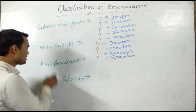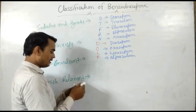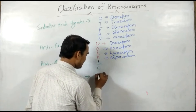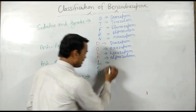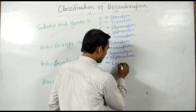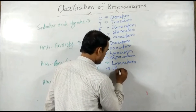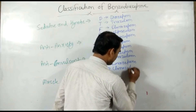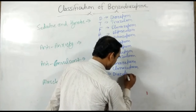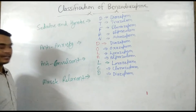The next subclass is anticonvulsant — which benzodiazepines have anti-convulsant action? Remember the mnemonic L-C-T. L for Lorazepam, C for Clonazepam, and D for Diazepam. These three drugs have anti-convulsant action.